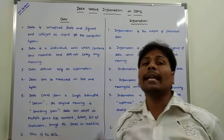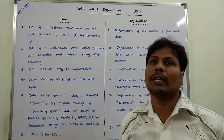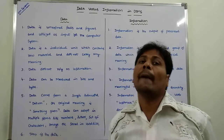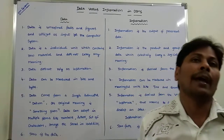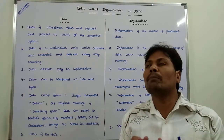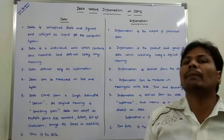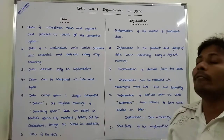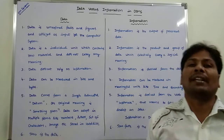Third, data does not rely on information — data does not depend on information. But information is relied on data. Information can be obtained from the raw data, so we can say that information is derived from data, whereas data does not depend on information.